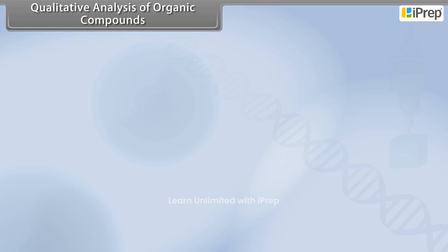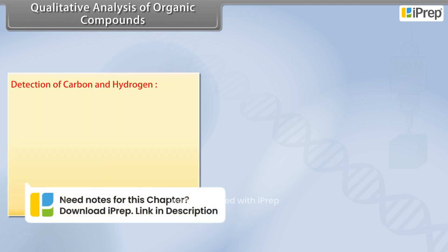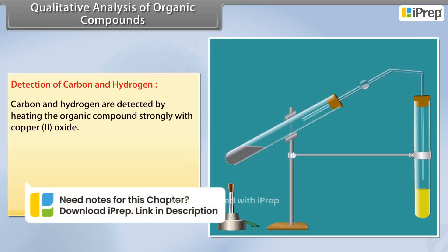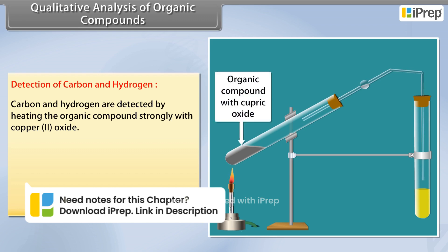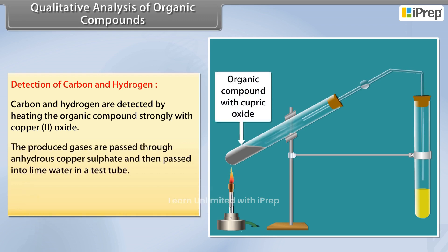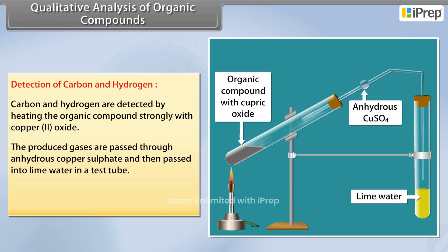Qualitative analysis of organic compounds: detection of carbon and hydrogen. Carbon and hydrogen are detected by heating the organic compound strongly with copper(II) oxide. The produced gases are passed through anhydrous copper sulfate and then passed into lime water.